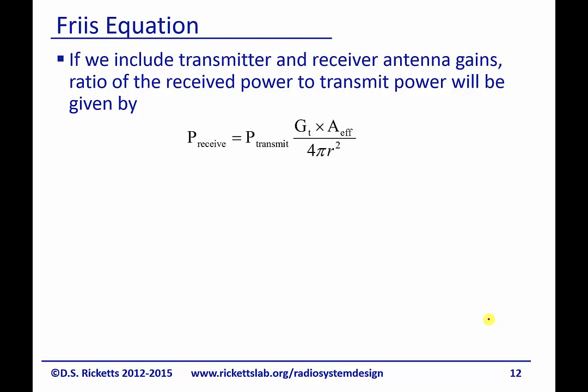The received power is simply the transmitted power times the gain of the antenna times the effective area. We can then plug in the following: 4π over λ squared. I've added a 4π here, so this is all just one here.